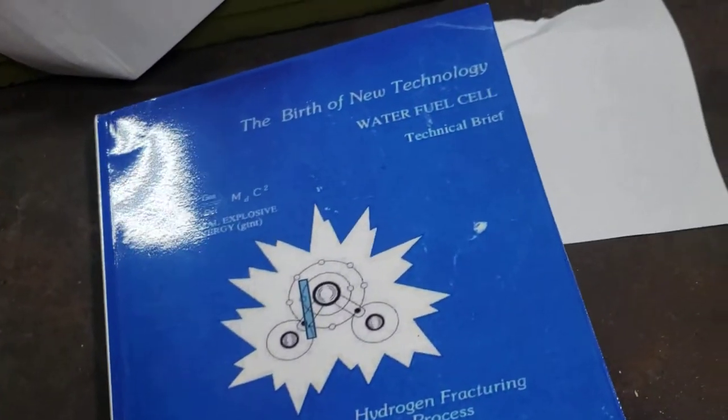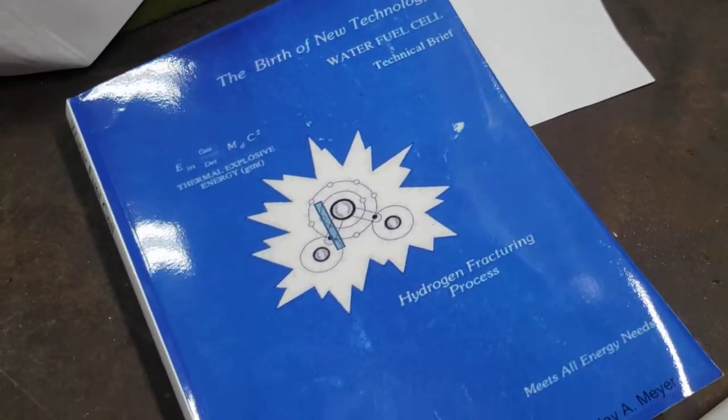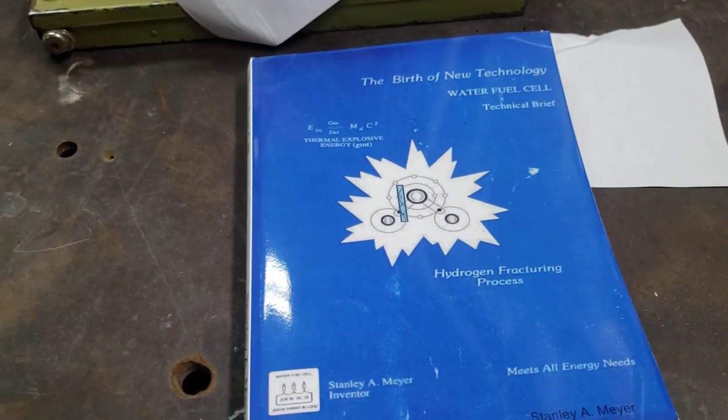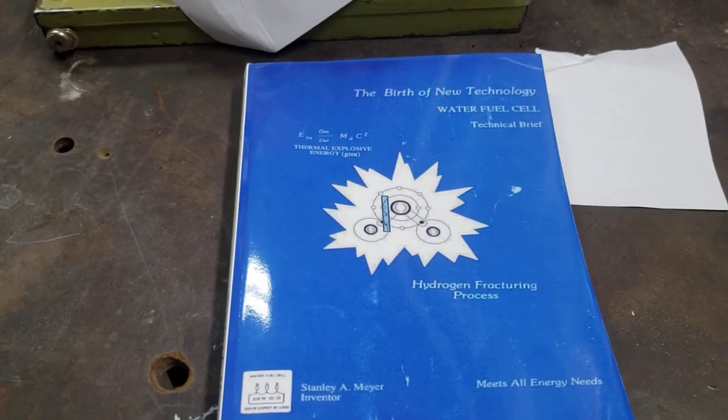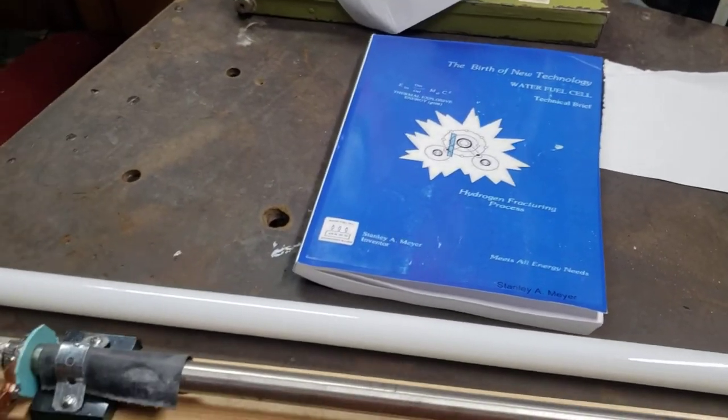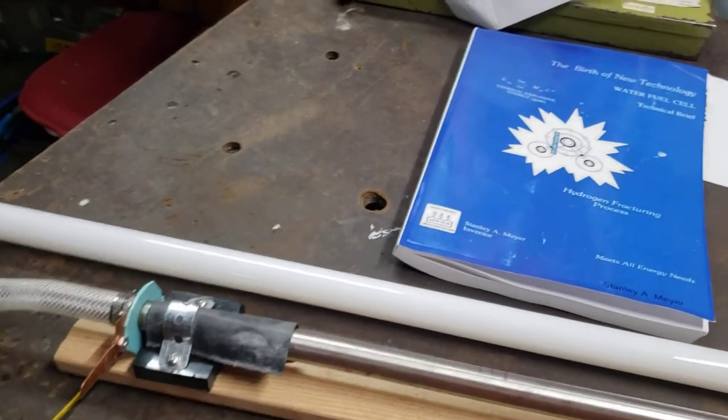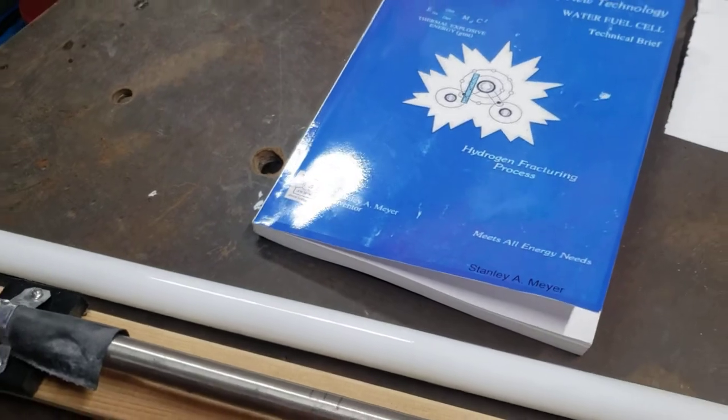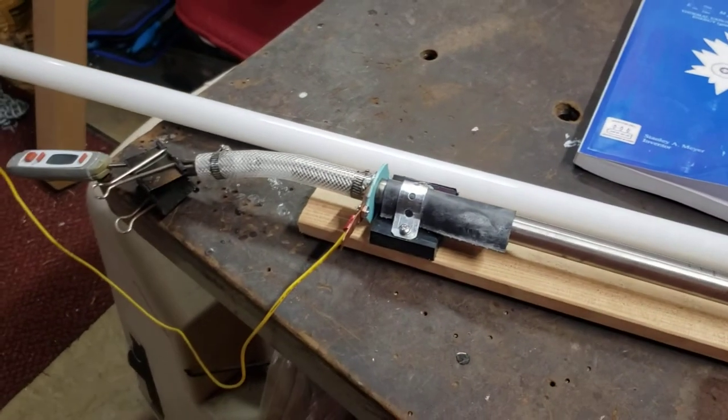If you need a copy, just text me, email me, or give me a message on YouTube and I'll sell you a copy for only $25. It's 400-some pages I think. The PDF file is free out there if you can find it on a water fuel cell website.